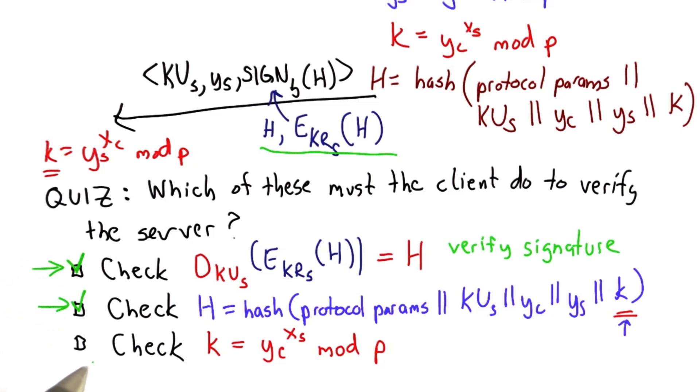So we need both of those. The third check doesn't make sense, and this uses yc as well as xs, which is the secret value of the server. If that was revealed, that would break the protocol.